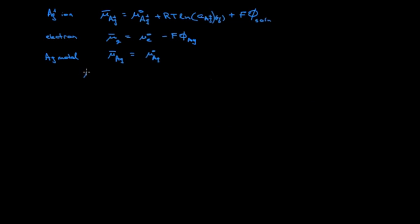And we will then set the electrochemical potential of the products equal to the electrochemical potential of the reactants. On the product side, we have only silver metal. On the reactant side, we have silver ions and the electron.